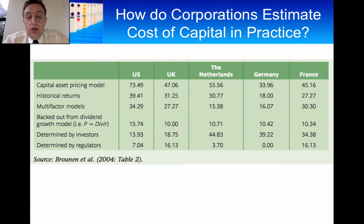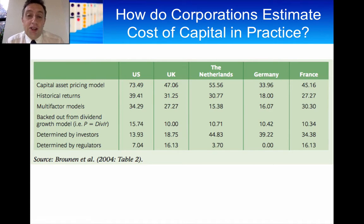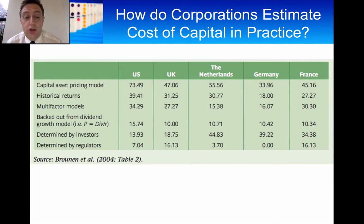If CAPM isn't particularly good, what other methods have been used? Well, believe it or not, a lot of companies just look at historical returns. That comes from the view that the best prediction of the future is just the past. It's really difficult to predict the future, so why not just look at what investors have earned in the past and use that for the future? Very simple, and you can see that a large proportion — 30% in the UK — of companies just use historical returns.